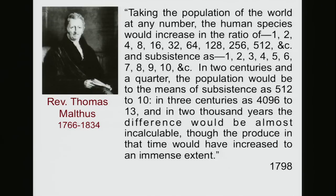Malthus said: in two centuries and a quarter, the population would be to the means of subsistence as 512 to 10. The population keeps doubling but subsistence only increases linearly. In three centuries, as 4,096 to 13. And in 2,000 years the difference would be almost incalculable. He recognized that technology can help increase our food supply, but he assumed technology only grows at a linear rate, whereas our populations inherently grow exponentially.